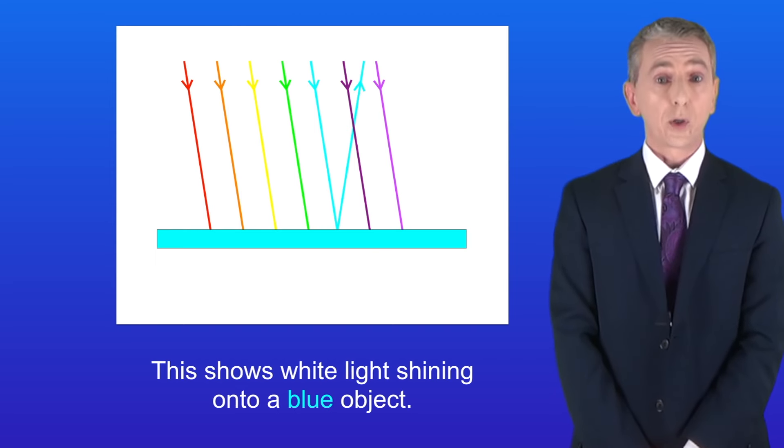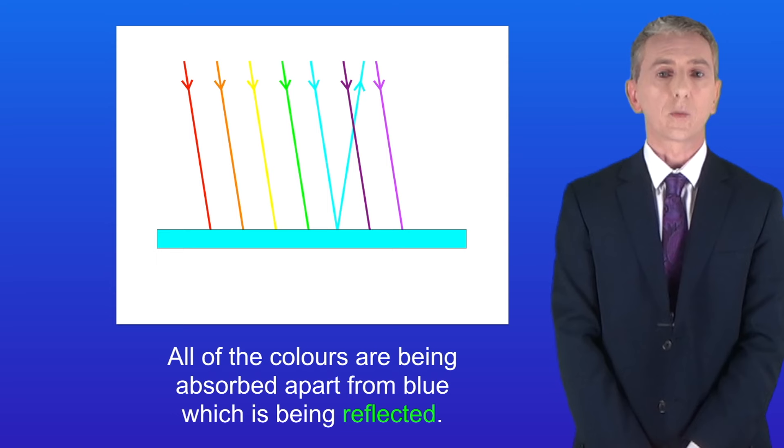This shows white light shining onto a blue object. And again, all of the colors are being absorbed apart from blue, which is being reflected.